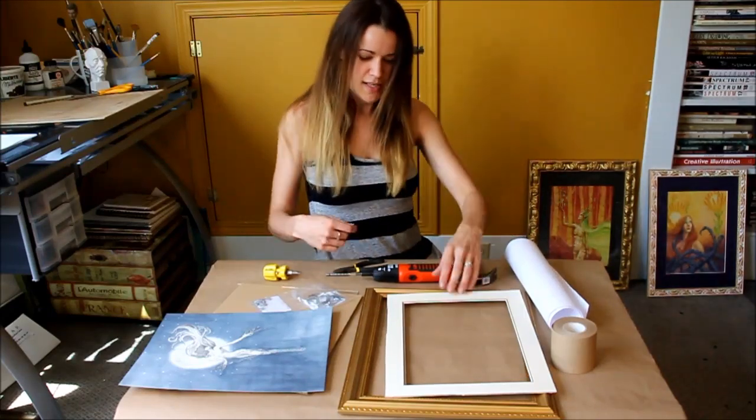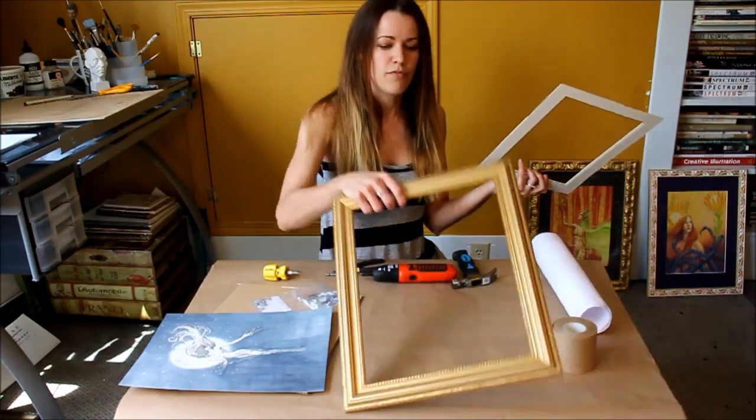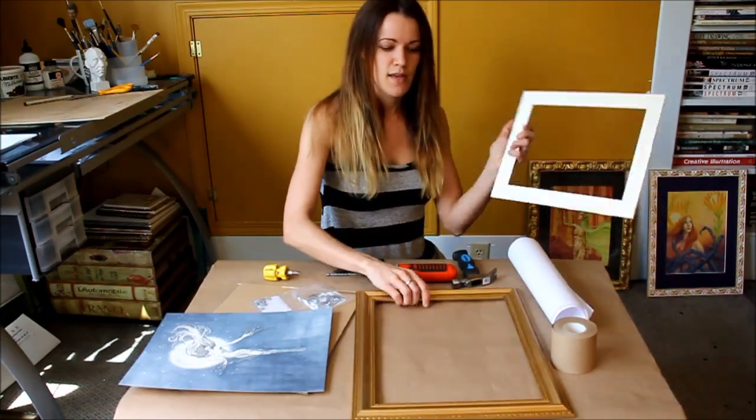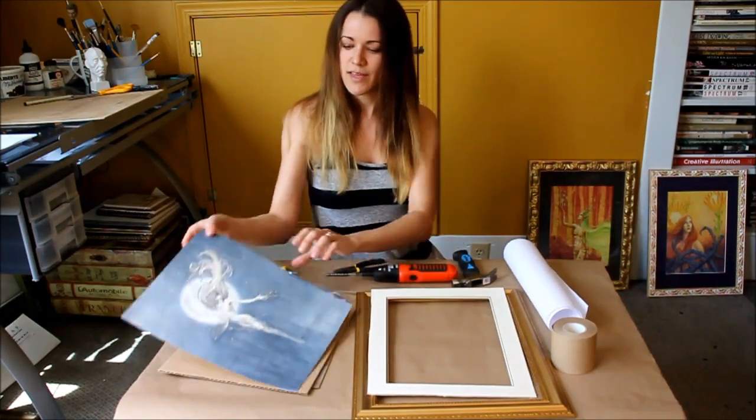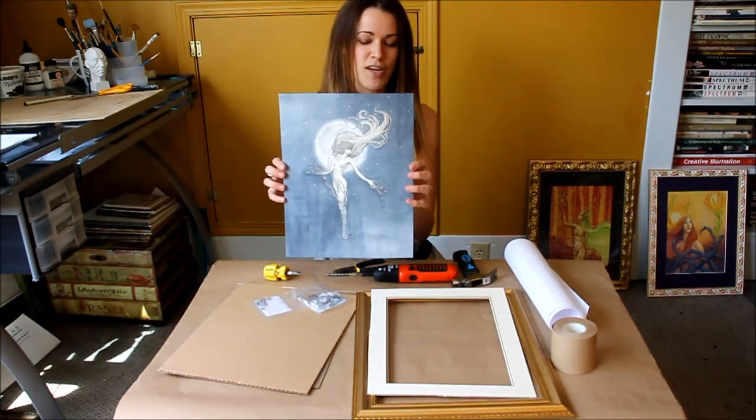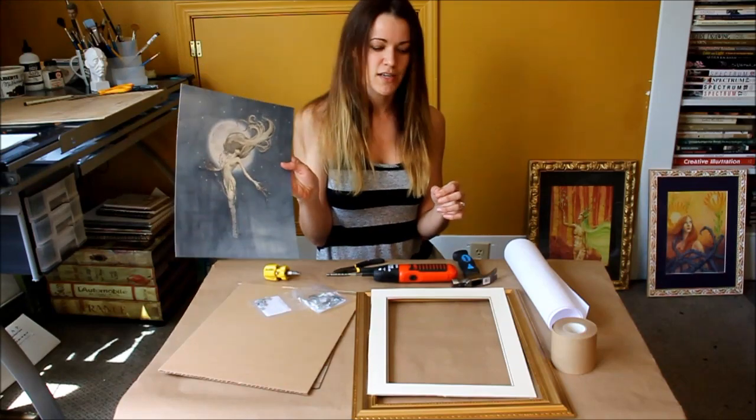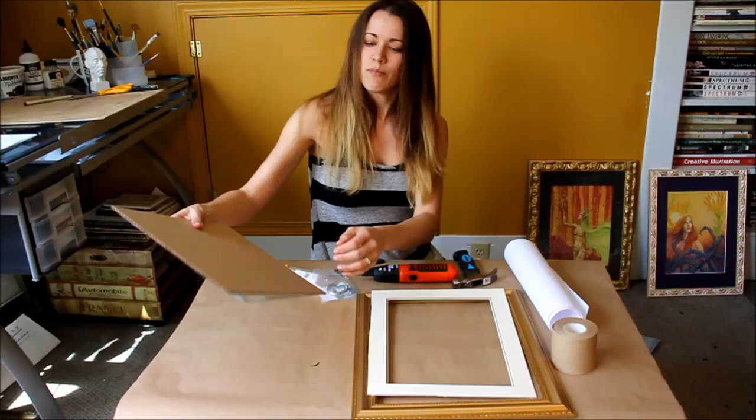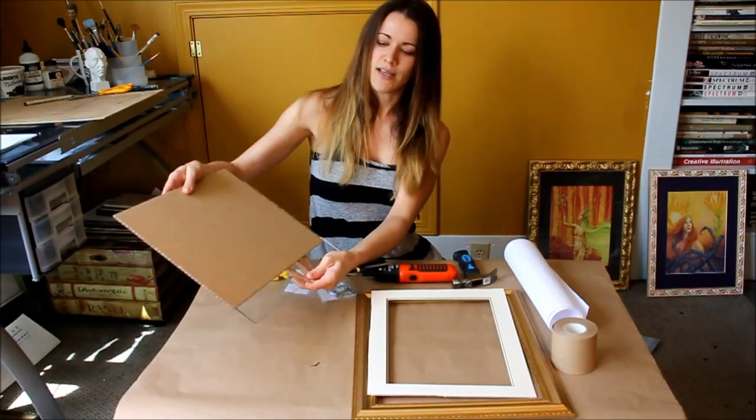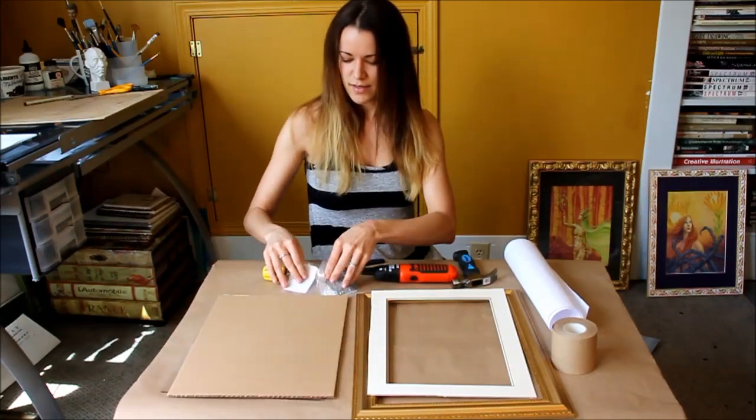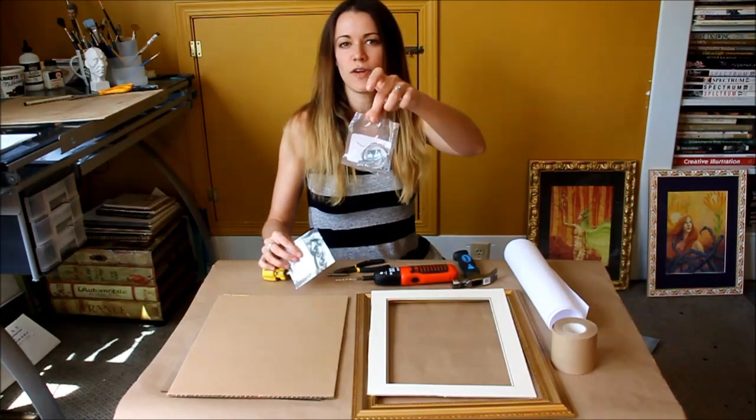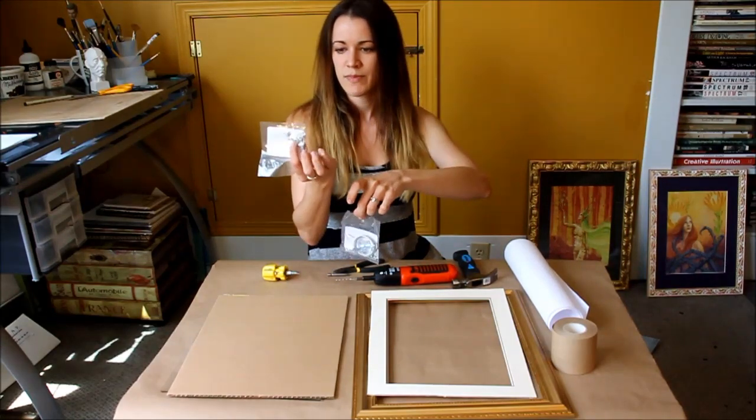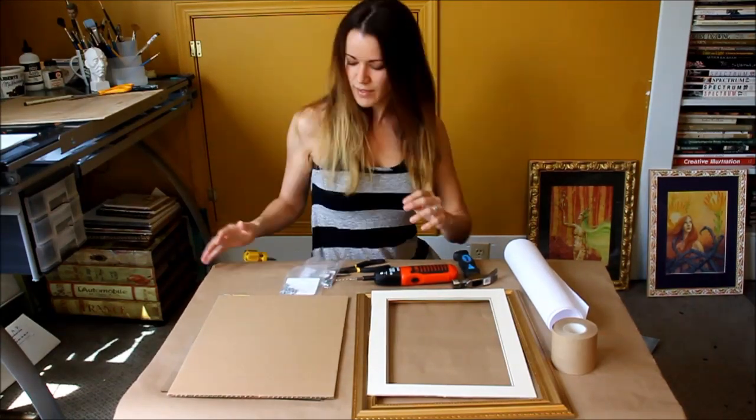So what you'll need is a frame and a mat to go with it, and this is the painting that I'm framing today. It's watercolor, ink, and graphite. When you get a frame, sometimes it comes with a piece of glass and the backing, which is handy. And then there's the framing hardware and the little tabs that you have to nail into the back to hold everything together.